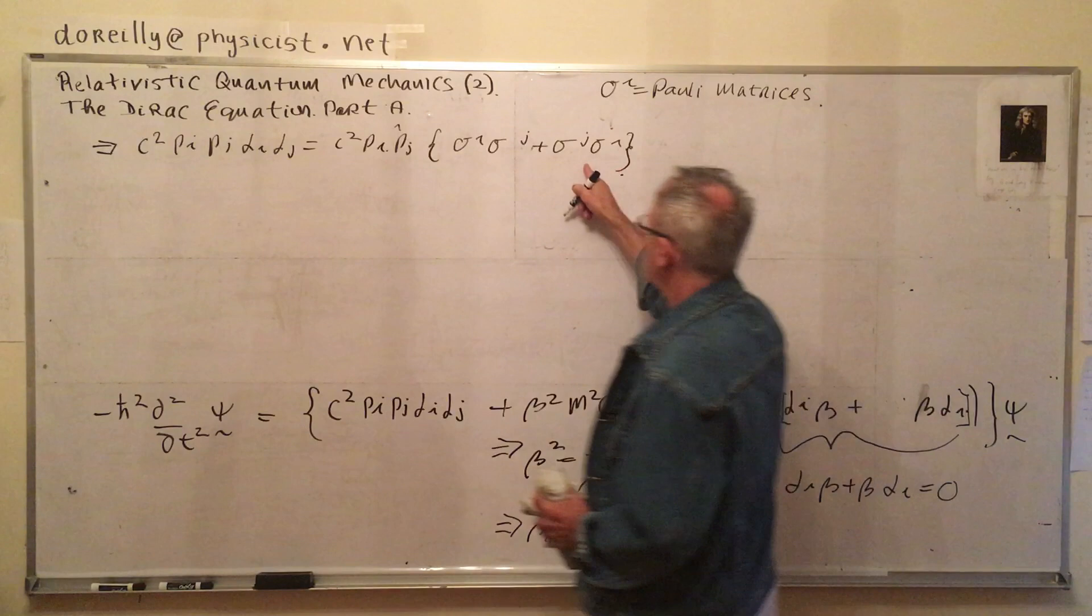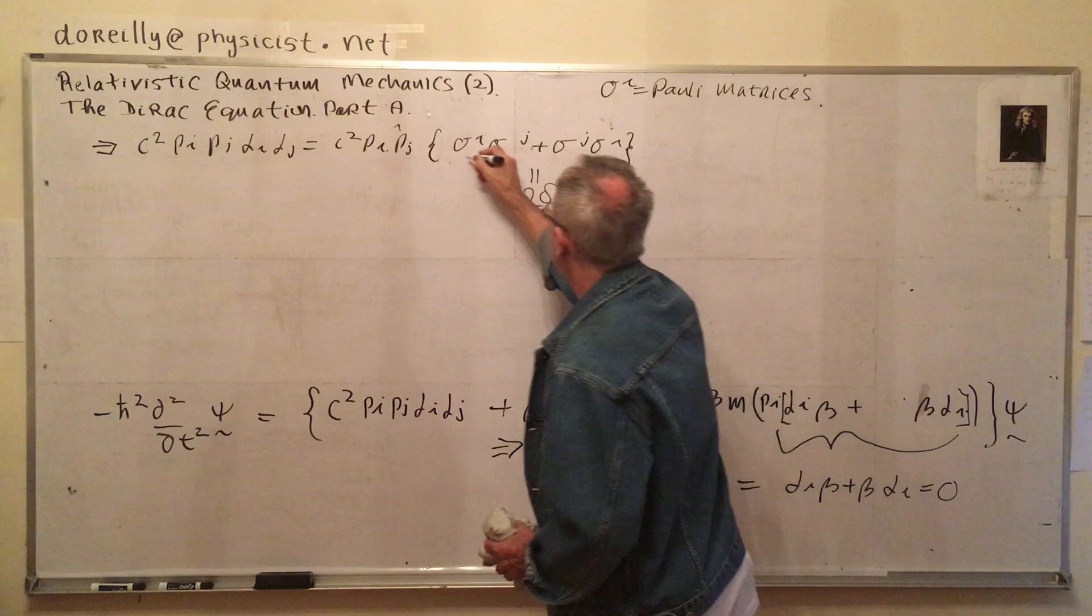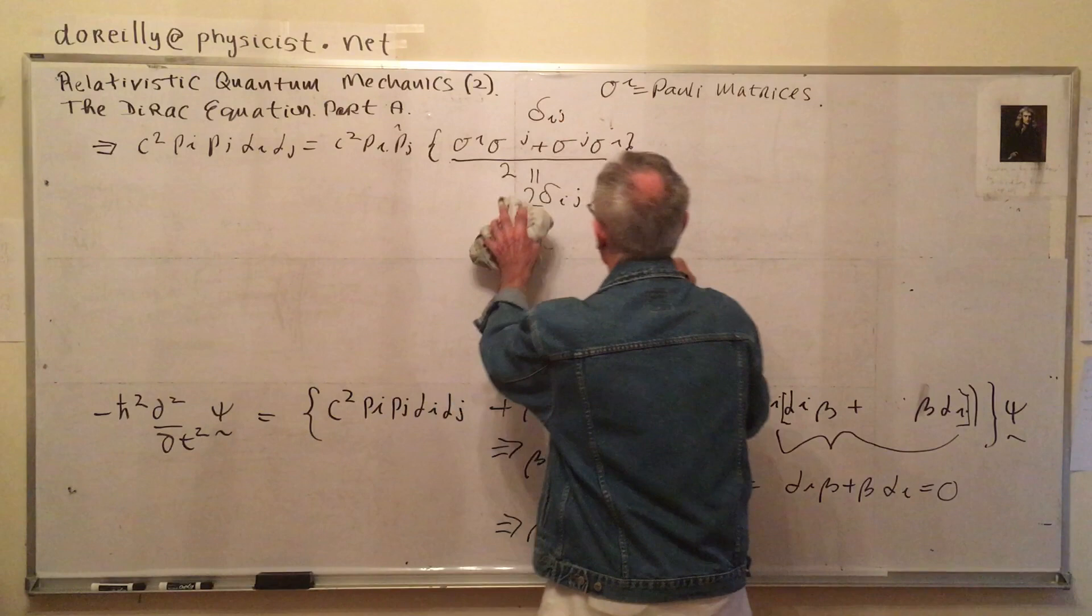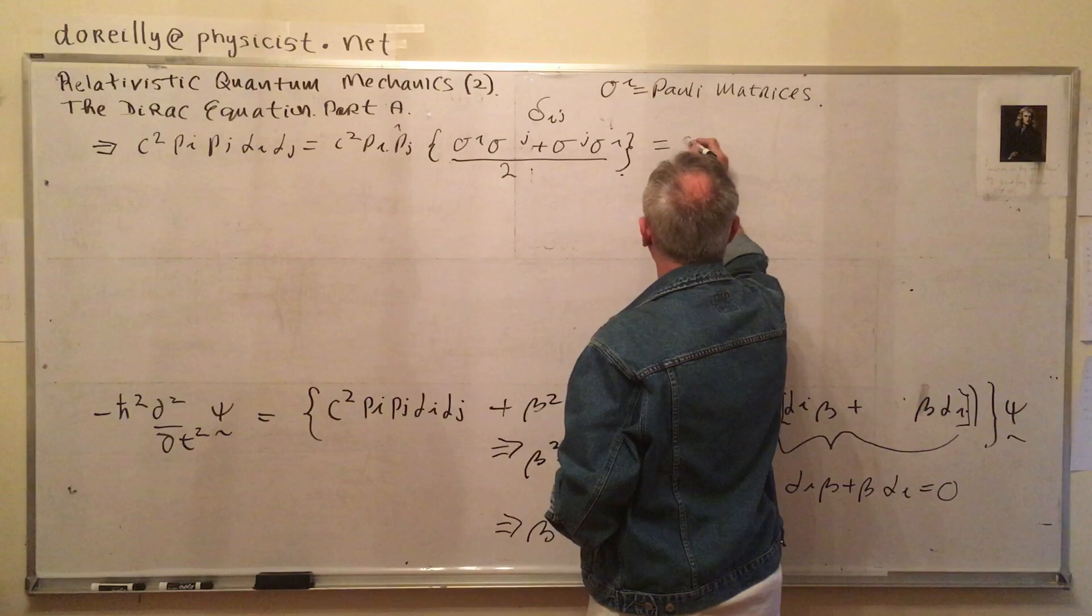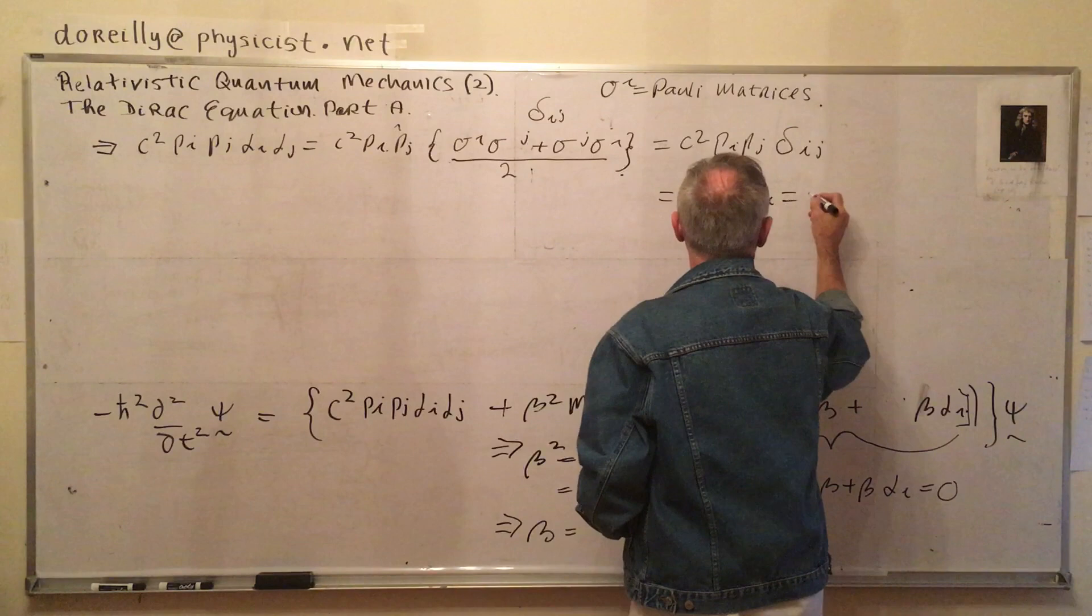So this anticommutator here, we said, is going to give me 2 delta ij. So if I just divide this whole thing by 2, I get delta ij. So this whole thing here is c² pi pj delta ij, which is c² pi pi, which is c² p², as required.